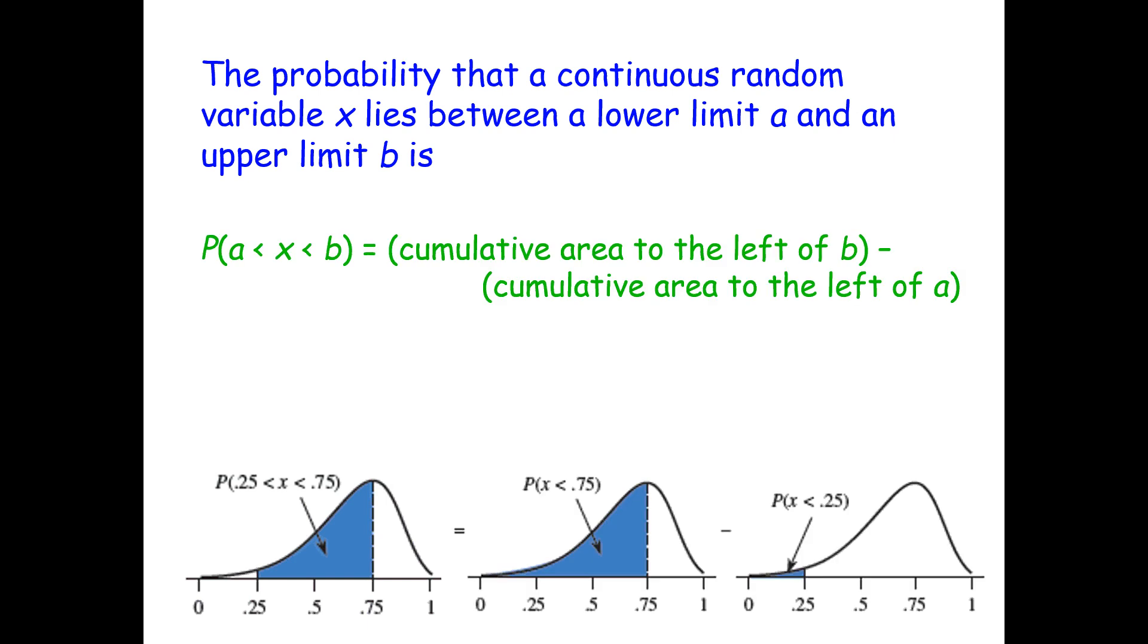The probability that a continuous random variable x lies between a lower limit a and an upper limit b is the cumulative area to the left of b minus the cumulative area to the left of a. So the probability that x is between a and b is the probability that x is less than b minus the probability that x is less than a. In order to find this, we take the area of b and subtract the area of a from that, and that will give us our finalized answer.